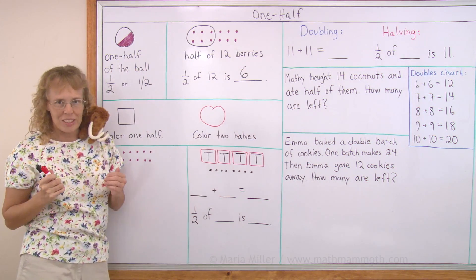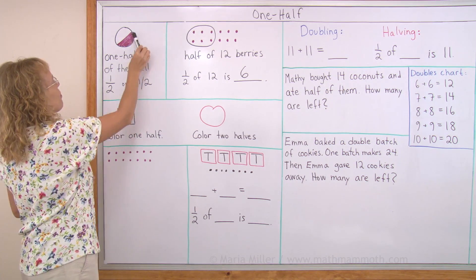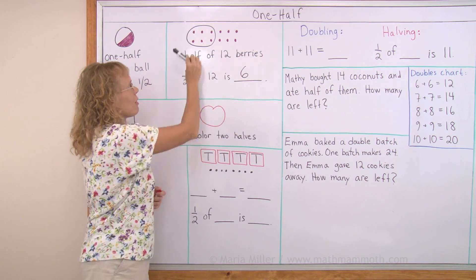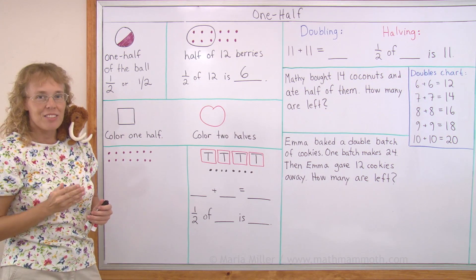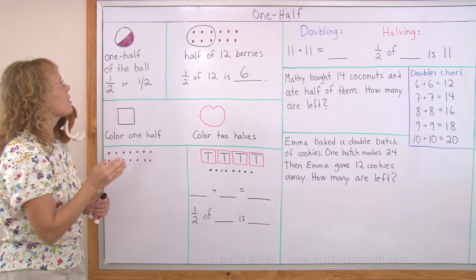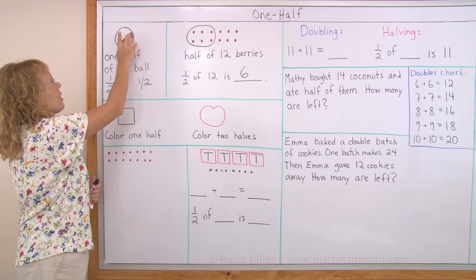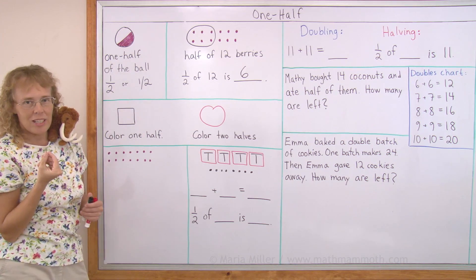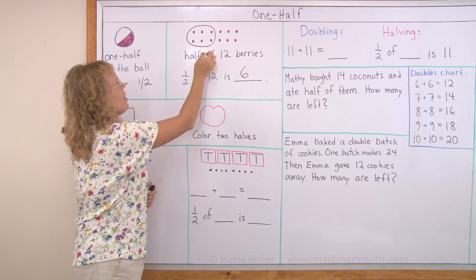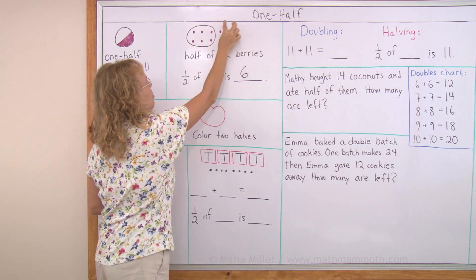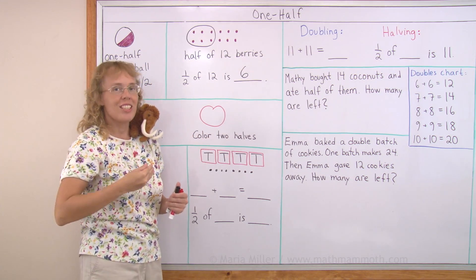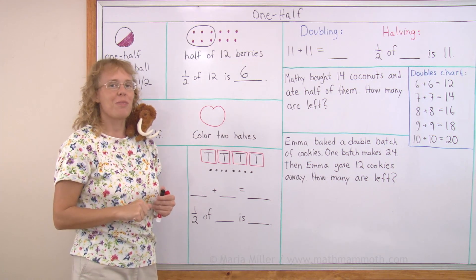And notice that each time, whether it's my circle or whether it's my twelve berries, I have divided those into two equal parts. There's this part and this part and they are equal parts. Each part is one half. Each is one half of the total.